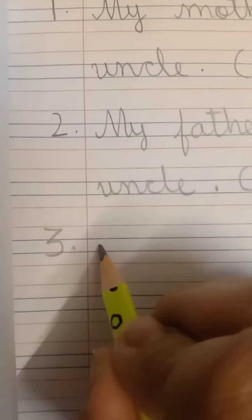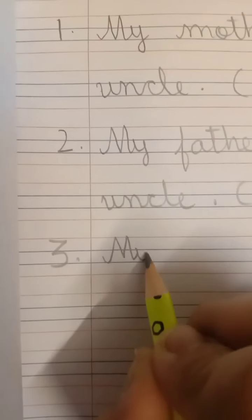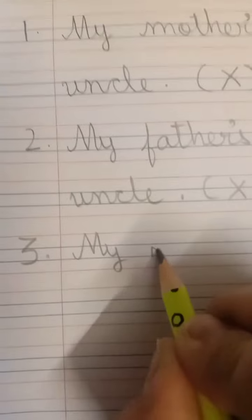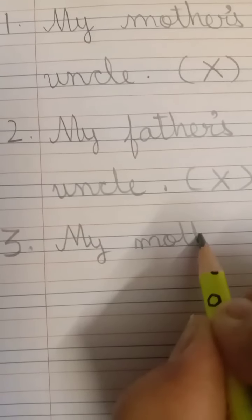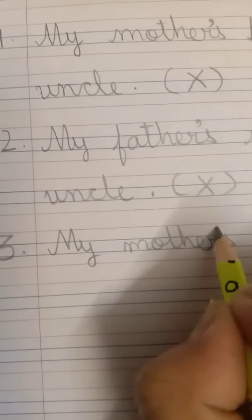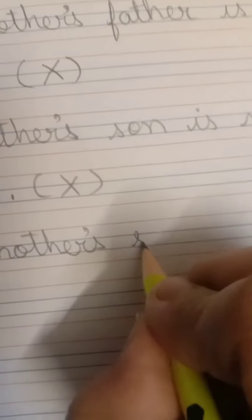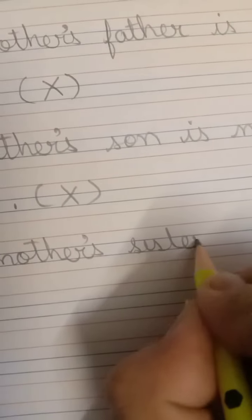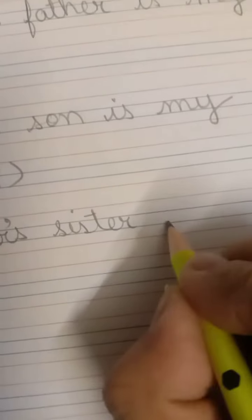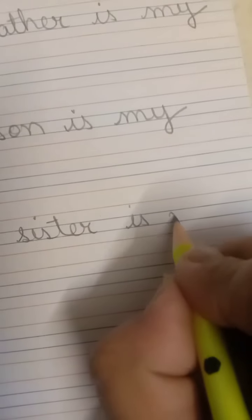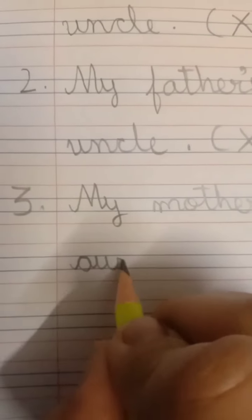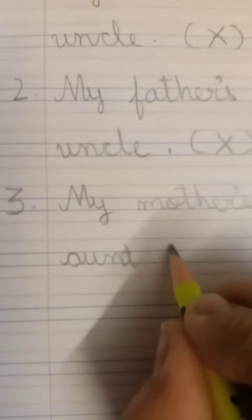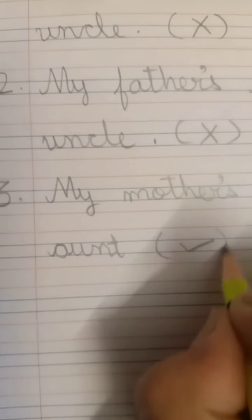Number 3, write: My mother's sister is my aunt. Put a checkmark, that's right.